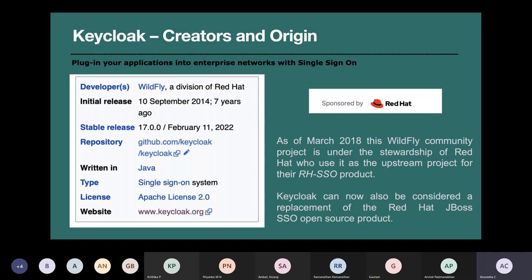Keycloak is a fairly recent library — 2014 was its first release, but it became a mature product only since 2018. It was developed by Red Hat using their own SSO internal project, which they later spun off as an independent library. When they had the JBoss server plugged in as part of the Apache license, they decided it was fairly independent and could be used by anybody.